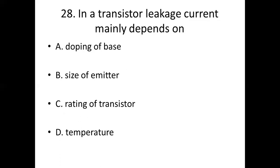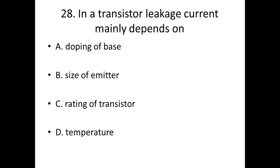Question 28: In a transistor, leakage current mainly depends on? Option A: doping of base. Option B: size of emitter. Option C: rating of transistor. Option D: temperature. Answer: Option D — temperature.